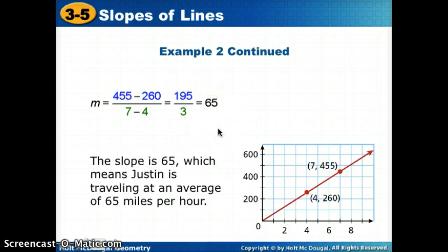So what we're saying is that the slope is 65, which means Justin is traveling at an average of 65 miles per hour. So if he's traveling at 65 miles per hour at a steady pace, this would graph where he would be at each point in his travels. So we could say where he'd be at 8 o'clock. We could go back and see where he was at 2 o'clock. We can continue on until he gets there.